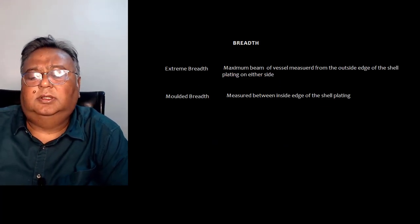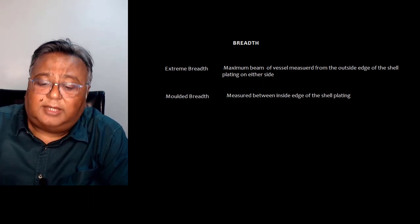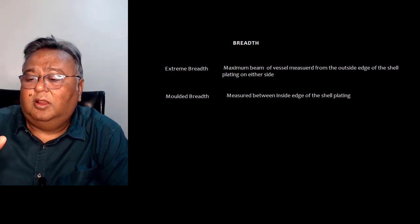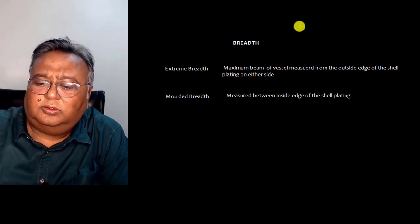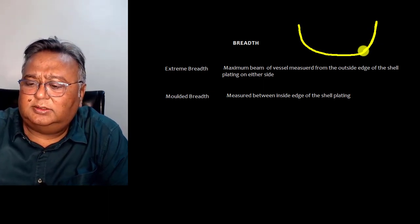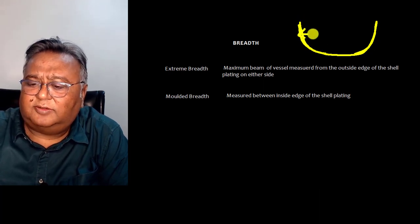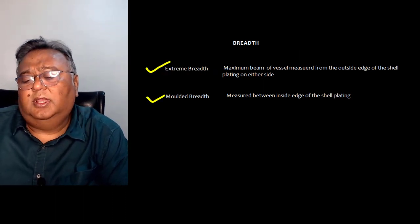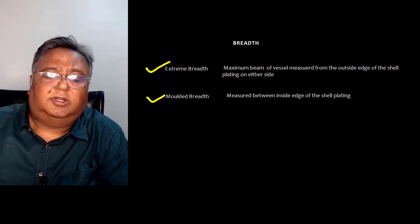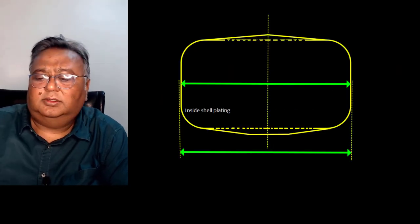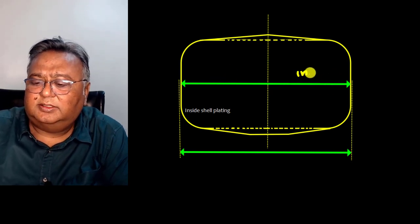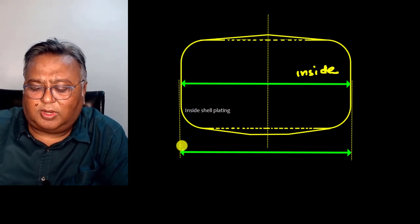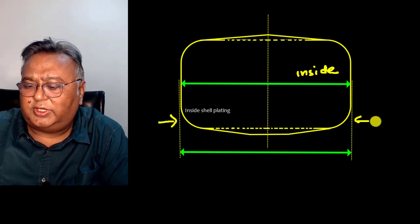Now let's talk about breadth. We have extreme breadth and molded breadth. Extreme breadth means the maximum beam of the vessel measured from the outside edge of the shell plating — measured from outside. Molded breadth is measured from the inside edge of the shell plating — measured from inside. As shown here, this is the molded breadth and this is the extreme breadth.